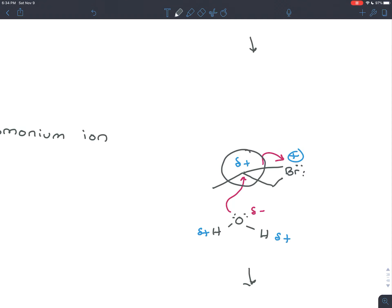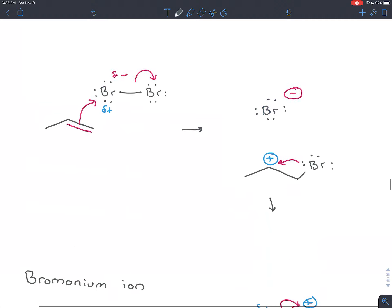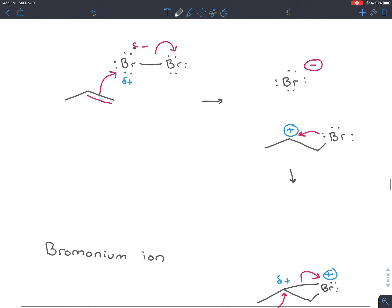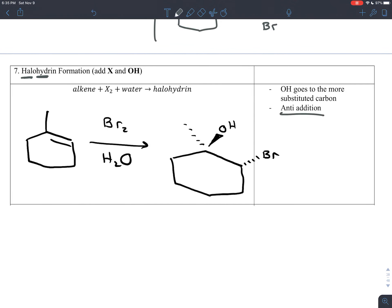That means that a slight positive charge forms on the more substituted carbon, which turns that into the electrophile that water attacks. So you could see how the two details in halohydrin formation arise. It's anti addition because after the bromine attacks it's really bulky in the bromonium ion, so that water has to attack from the opposite side. And the water attacks the more substituted carbon because that's the one that has the slight positive charge. That's the one that can handle the slight positive charge better.